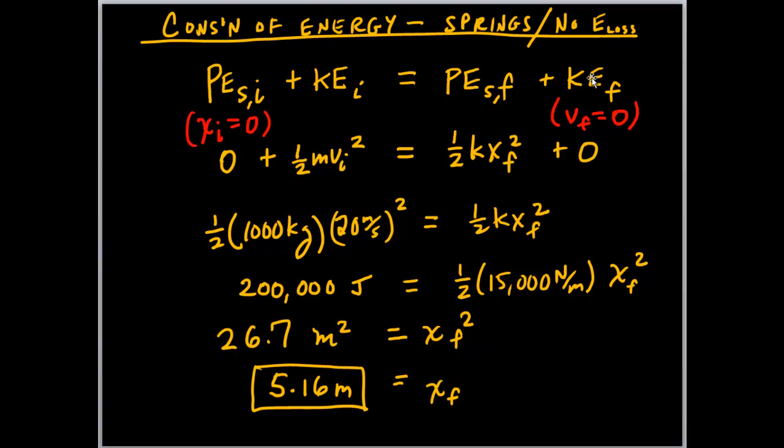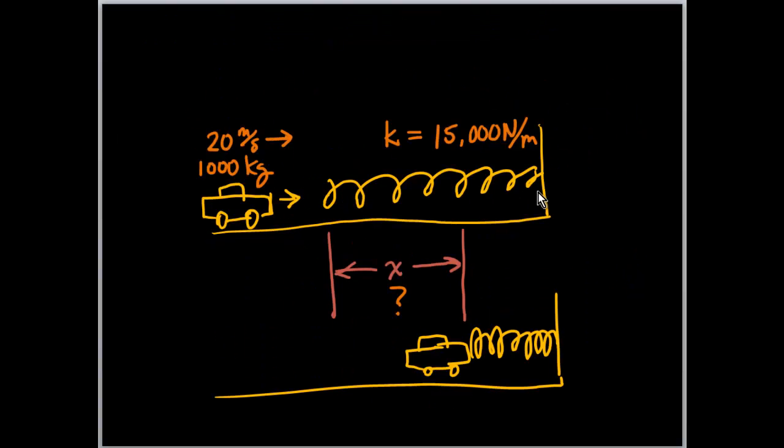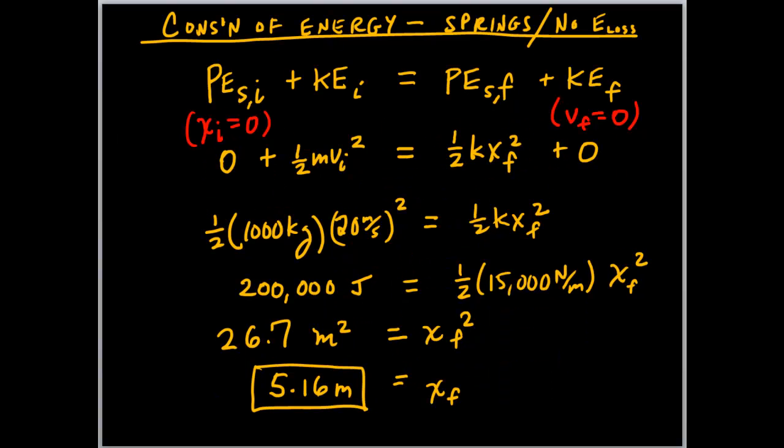Now right off the bat, it helps if we can identify anything that's zero. Initially, if the spring is not compressed at all, it's in a relaxed state, we can set the potential energy of the spring to zero. As X, the distance compressed or stretched, is zero.